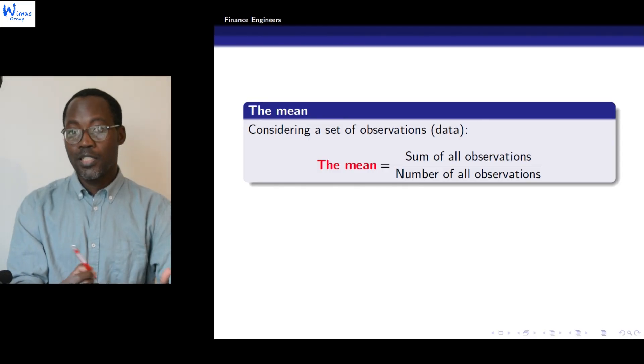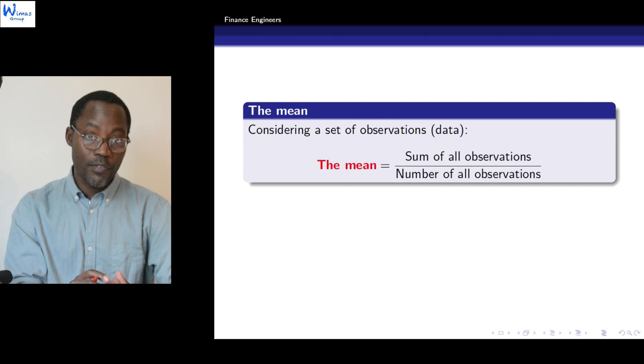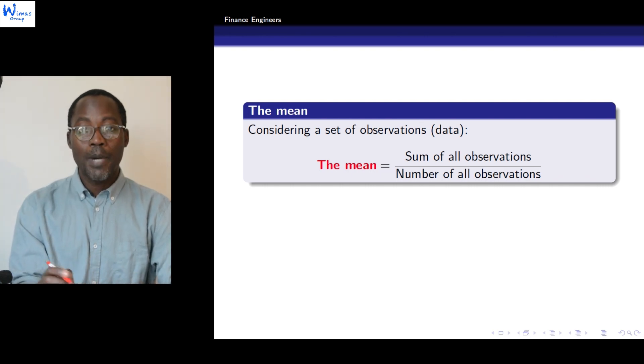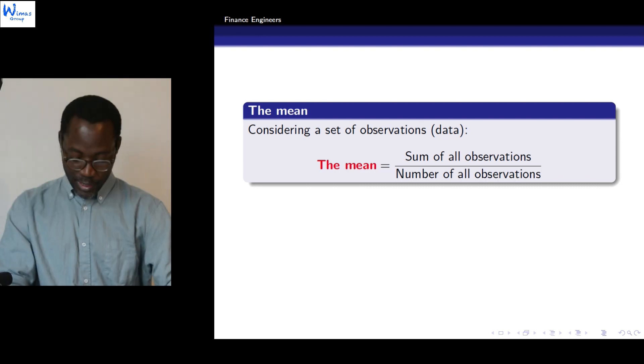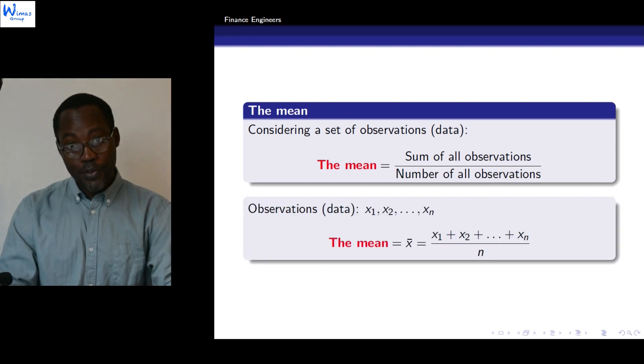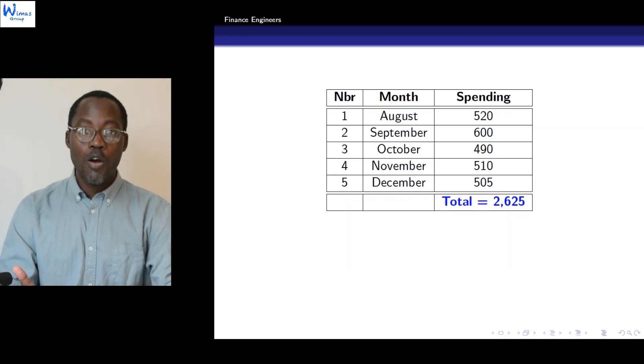In statistics, we often work with sets of data, and the mean, in considering a set of data, is the sum of all the observations in a given set of data divided by the number of those observations.